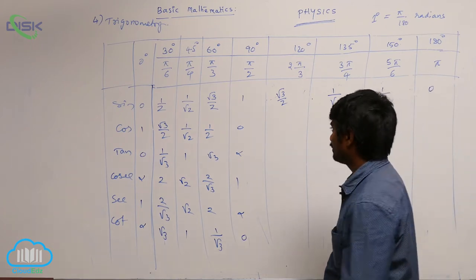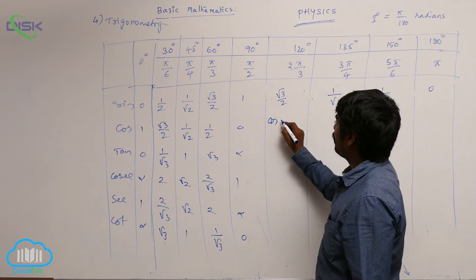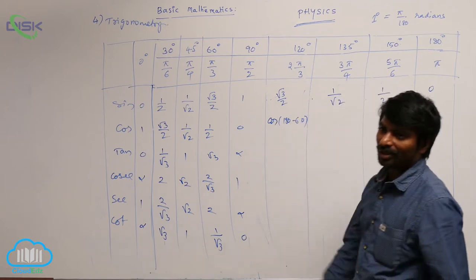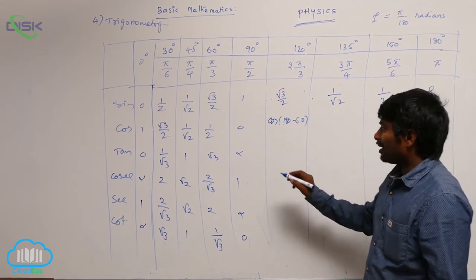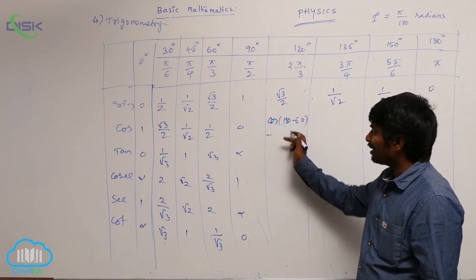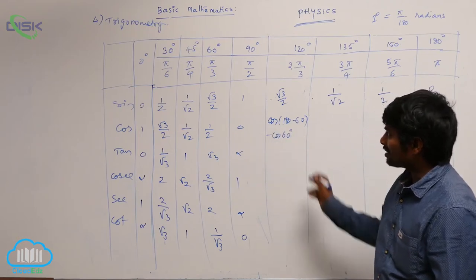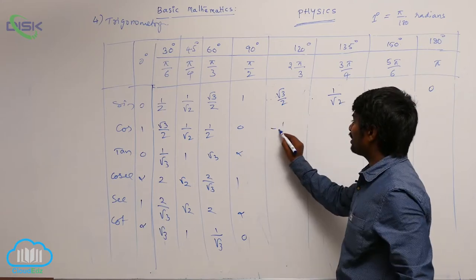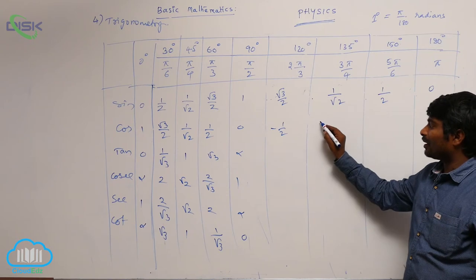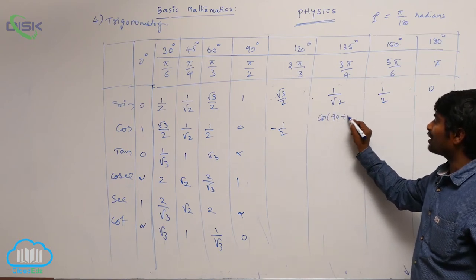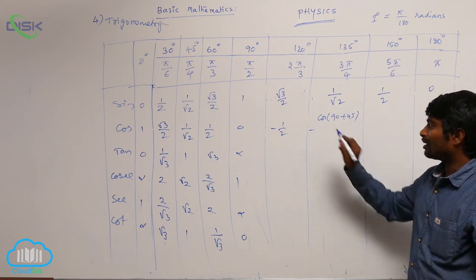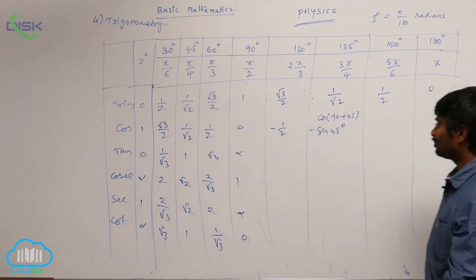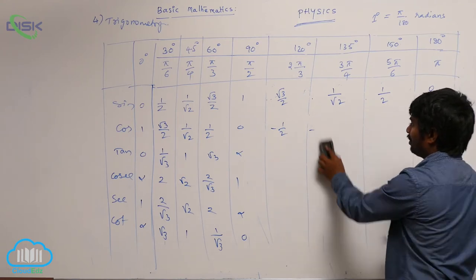For cos values, taking cos(180 minus 60), it is in the second quadrant so cos is negative. For 180 you get cos 60, so the result is minus cos 60, which is minus 1 by 2. For cos 135, taking cos(90 plus 45), in the second quadrant cos is negative, and for 90, cos becomes sin, giving minus sin 45, which equals minus 1 by root 2.